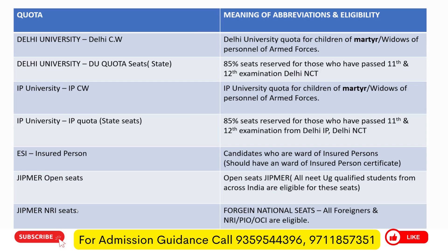Now moving ahead with Delhi University. Kindly note — this is specifically for those who are from Delhi. Please listen to this very carefully. We have tried to write it in very simple, understandable language. Please do take a screenshot. Delhi University has different quotas. First is Delhi CW quota — this is a quota for children of army personnel who were martyred for any reason, or it is reserved for widows of army personnel who were martyred.